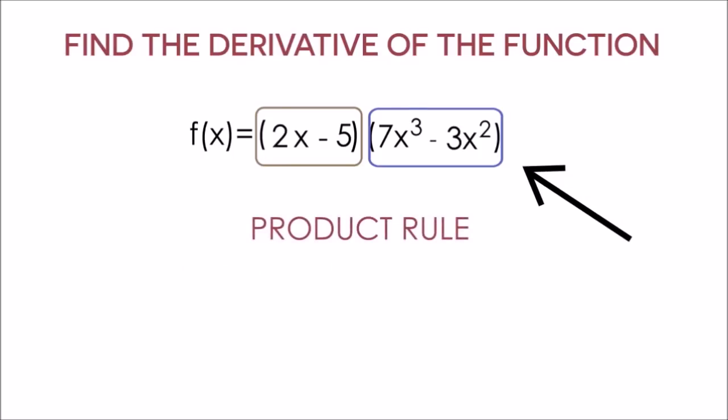And notice how we do have two things being multiplied with each other. We have the 2x minus 5 being multiplied with the 7x cubed minus 3x squared. So let's use the product rule to take the derivative of this function. So the first thing I like to do is to label our two things being multiplied with each other. So I'm going to label the 2x minus 5 our first thing. And the 7x cubed minus 3x squared, I'll label as our second thing being multiplied.